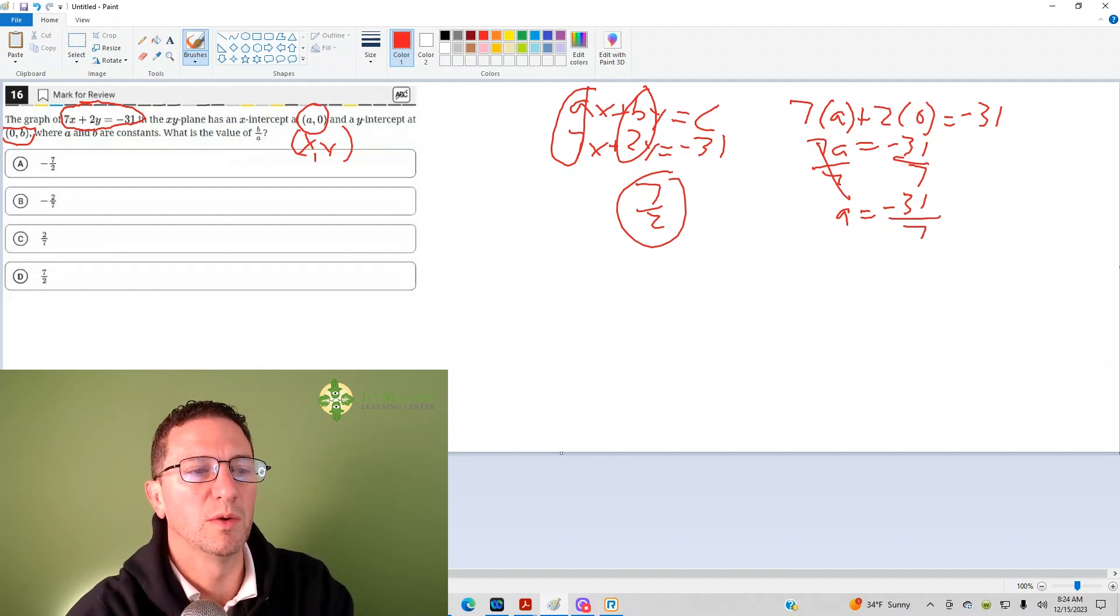Do the same with the y-intercept, which is 0,b. Now we've got 7 times 0 plus 2 times b equals negative 31. Well, 7 times 0 is just 0. That's gone. Divide both sides by 2. And you could say that b equals negative 31 over 2.